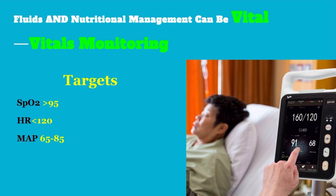Vital stands for vital monitoring. Oxygen saturation should be more than 95%. If it drops below 90%, it is worrisome — causes include pleural effusion or ARDS — and we should perform ABGs and further investigations. The target heart rate should be less than 120, and the target mean arterial pressure should be between 65 and 85 mmHg.